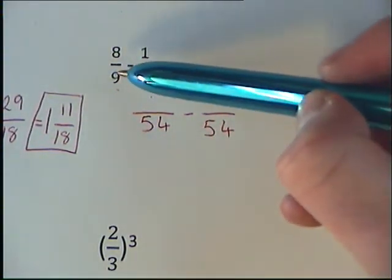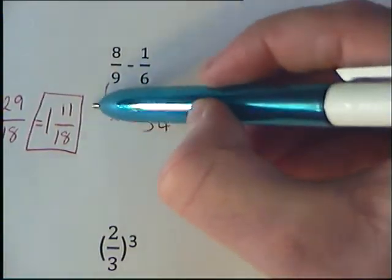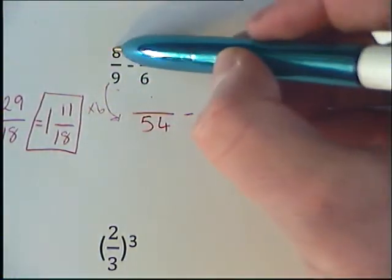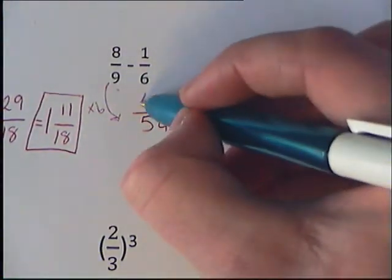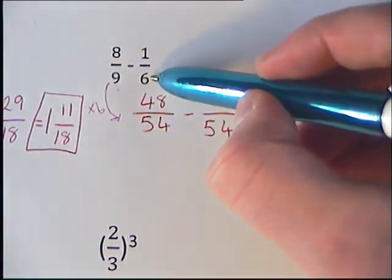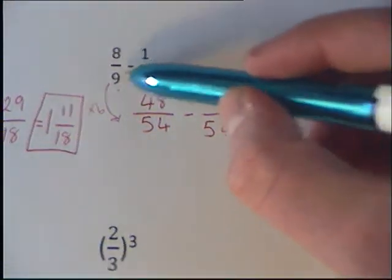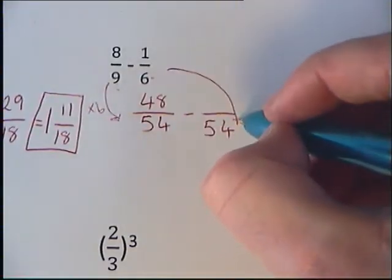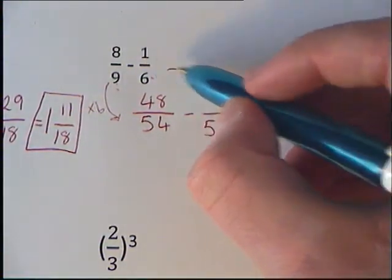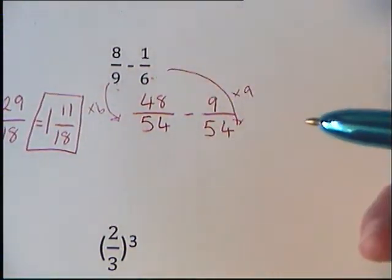What do we have to times our 9 by to get to 54? Times it by 6, so 8 times 6 gives us 48. What do we have to times our 6 by to get to 54? We have to times it by 9, so 9 times our 1... alright, times 9 there, 9 times 1 is just 9.